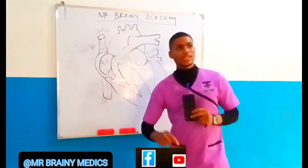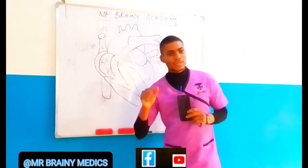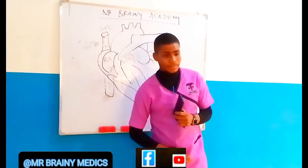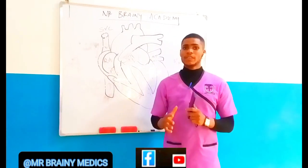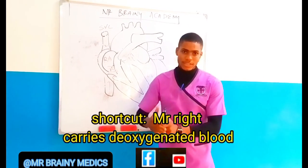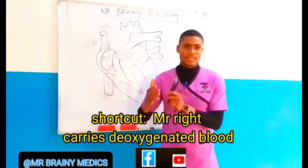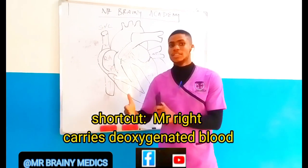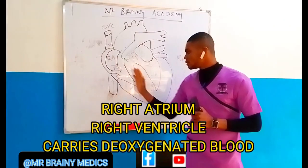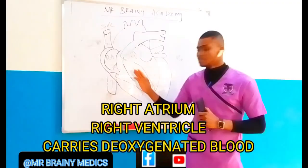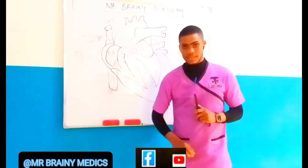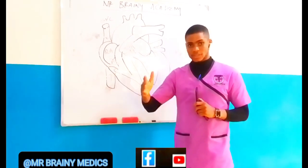The first place that this blood is going to flow is into the right atrium. When I was teaching, I gave people a shortcut — never forget: Mr. Right. Mr. Right carries deoxygenated blood. So this right atrium and right ventricle carry deoxygenated blood. Don't forget it — Mr. Right, deoxygenated blood.